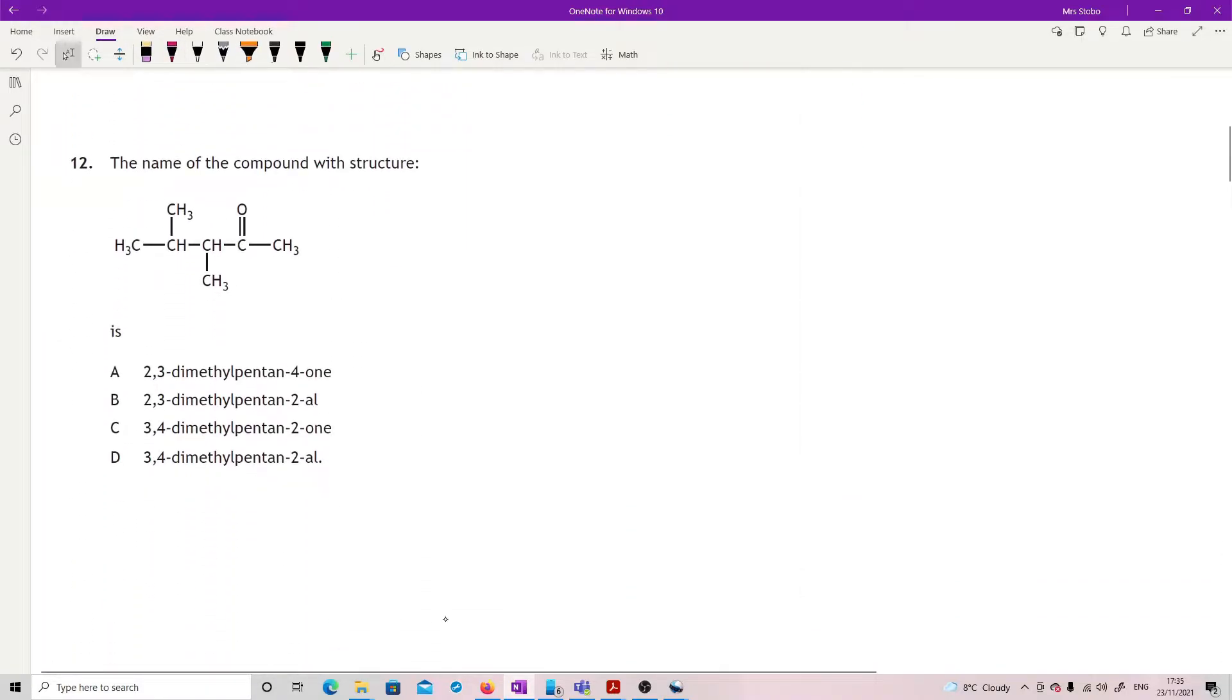Question 12: You're asked to name a compound, so we start with our basic things. We want the longest chain containing the functional group, so we can go one, two, three, four, five. So we agree with pent, okay, all of these say pent. Then you're gonna have to number from the end which allows you to keep the functional group at the smallest, so that's going to be one, that's going to be two, three, four, five. So pentan-2, and it's in between two carbons so it's an -one. But just to check, we have got a methyl off number three, we've got a methyl off number four, so 3,4-dimethylpentan-2-one is why that's C.